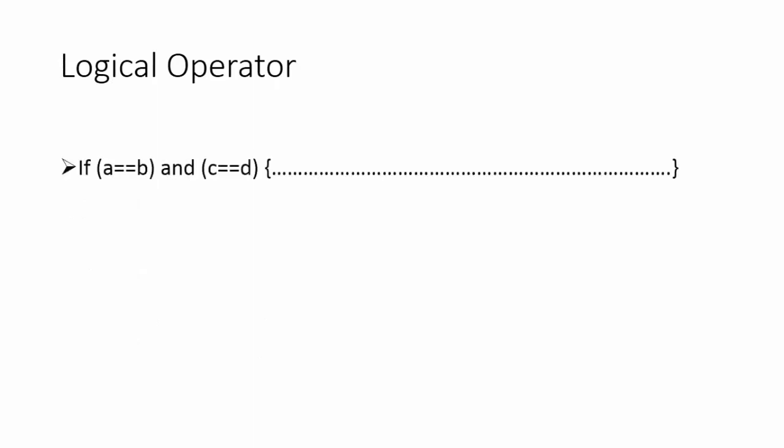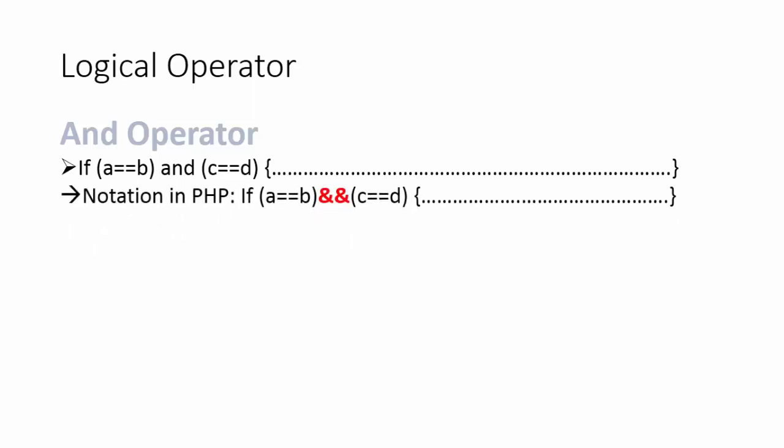Then we have logical operators. The first one is the AND operator, which only works when two conditions are both true. For example, if a == b AND c == d, then the if condition will be processed. The notation for the AND operator is the double ampersand sign, as shown in red.